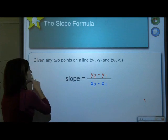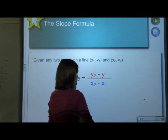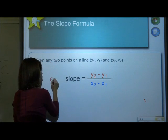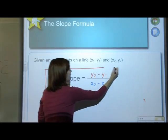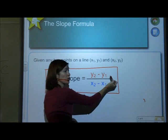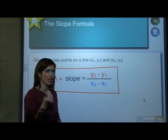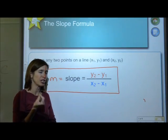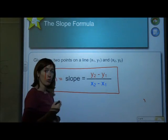All right. So as promised, given any two points on the line, x1, y1, x2, y2, you can find the slope, or the m, using the slope formula. I do want you to write it again. And I want you to put a big box around it. So the formula is y2 minus y1 all over x2 minus x1. Remember I said change means subtract. Change means subtract.